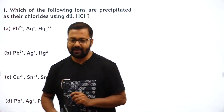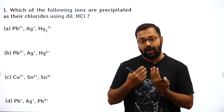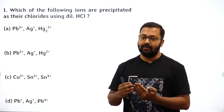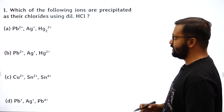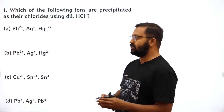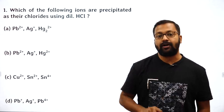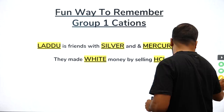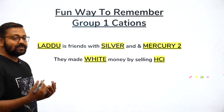Let's start today's session. The first topic is salt analysis. I'm taking a question from the previous JEE Sprint just to do a quick revision of metal ions in salt analysis. The question is: which of the following ions are precipitated as their chlorides using dilute HCl? Many people know this, but a common mistake happens when comparing Hg₂²⁺ and Hg²⁺, so here's a quick fun rule to remember.